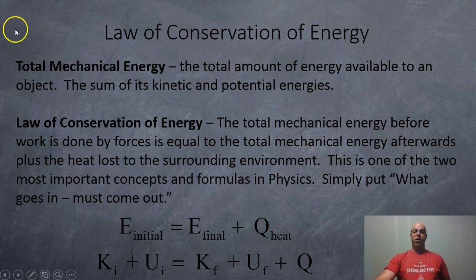So the law of conservation of energy. So don't forget, total mechanical energy is the total amount of energy available to an object. It's the sum of its kinetic and potential energies. And the law of conservation of energy is the total energy that goes into a system is equal to the total energy coming out of the system, plus the heat loss to the environment. What goes in must come out. You cannot create or destroy energy. You can only transform it. Okay, and that's it. I hope this helps.